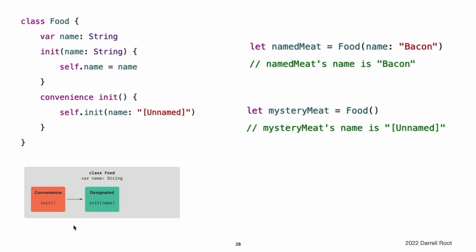The Food class also provides a convenience initializer, init, with no arguments. The init initializer provides a default placeholder name for a new food by delegating access to the Food class's init(name:) with a name value of [unnamed].